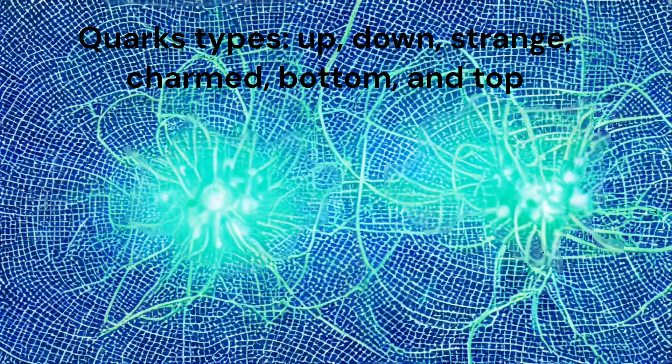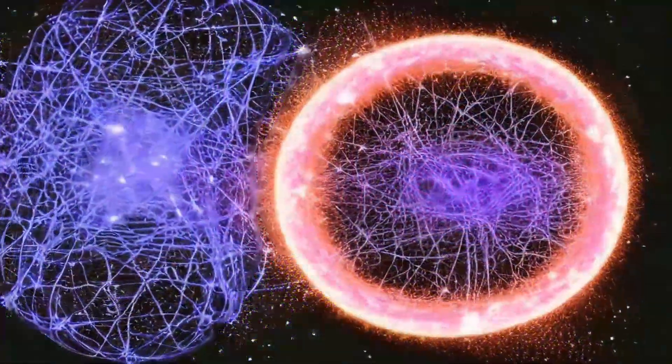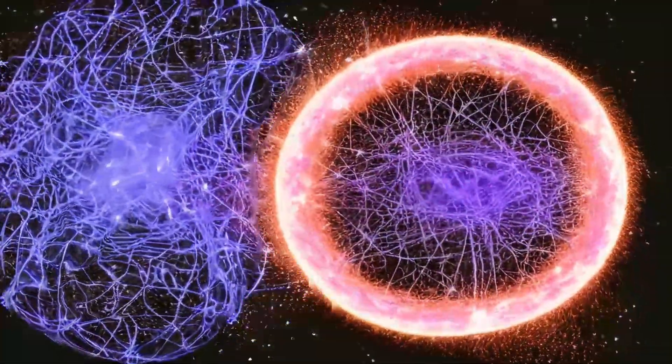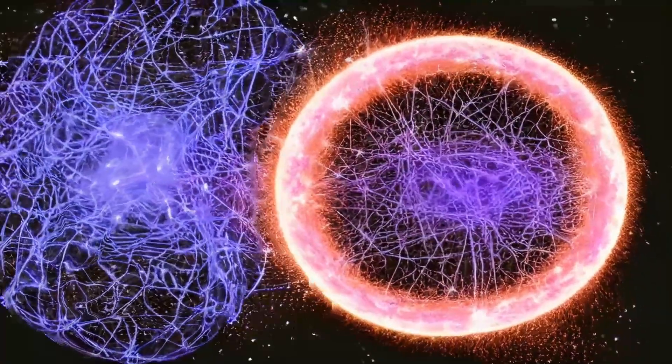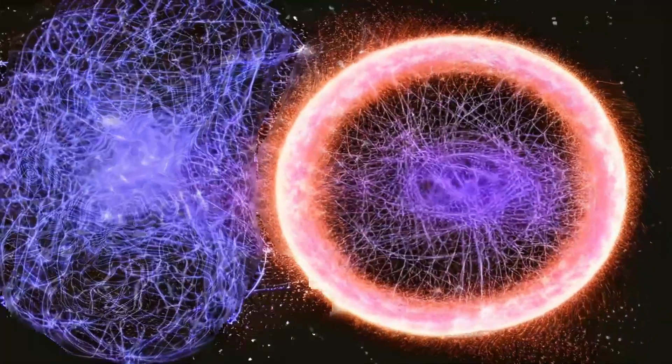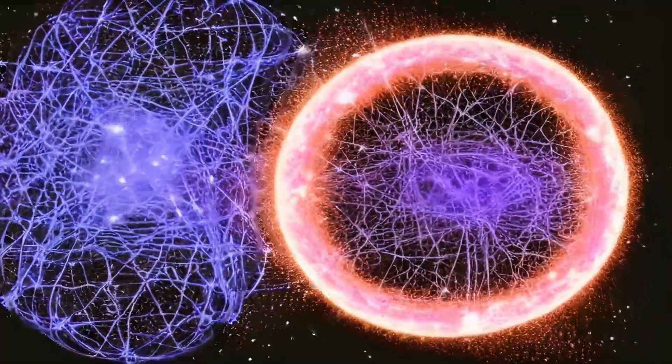The so-called strongly interacting particles known as hadrons, of which protons and neutrons are the most well-known, are made up of all of these constituent particles, with the exception of the top quark, which is too fleeting.